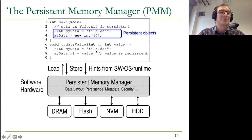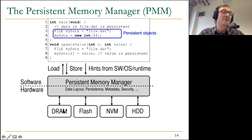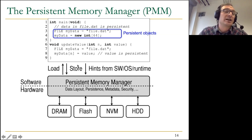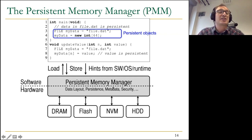The job of the persistent memory manager is to interact with the program and get hints from system software, operating system, and runtime to ensure that everything works correctly and at high performance. It's a software-hardware cooperative solution. You need to do the data layout and figure out what data structures go to which device. You could have many devices. The PMM manages persistence and security like existing virtualization layers do today. Virtual memory is one example; the storage system and file system interface is another.